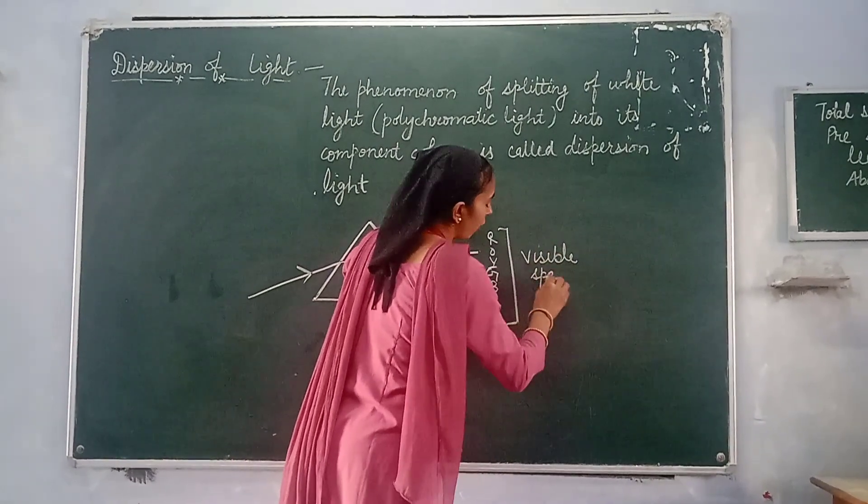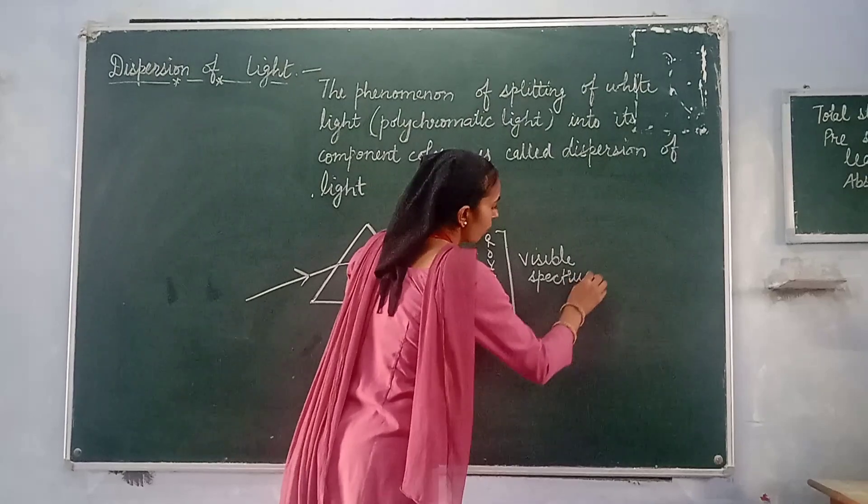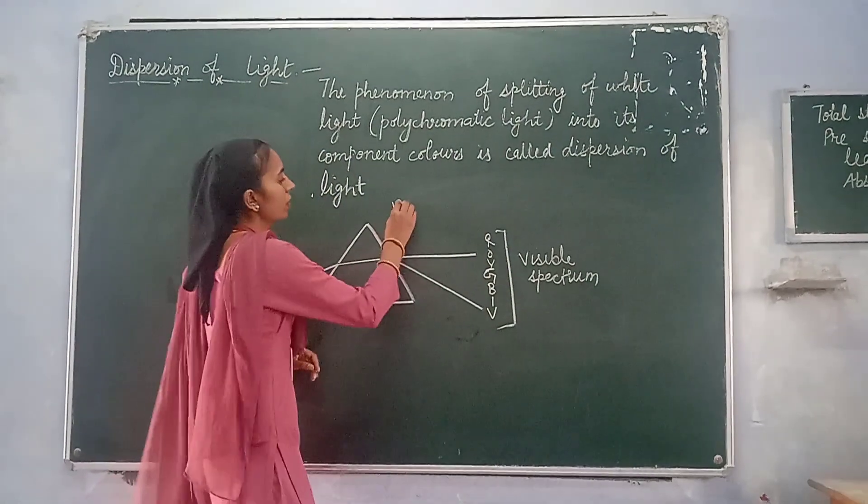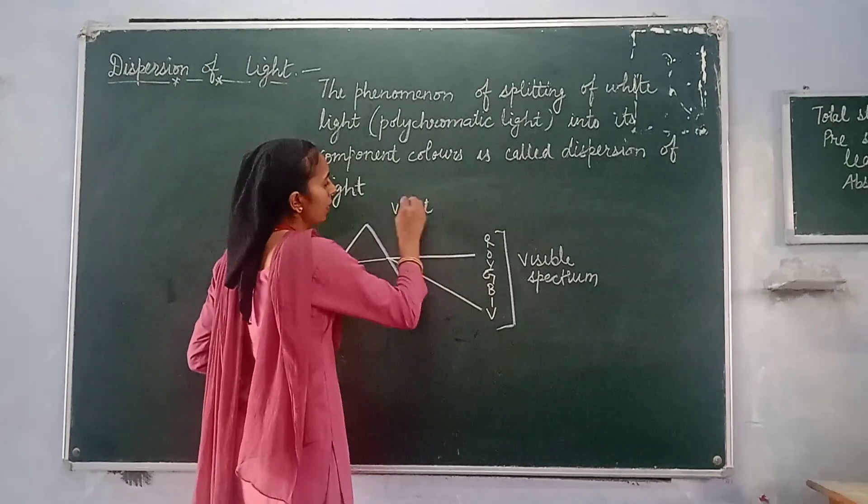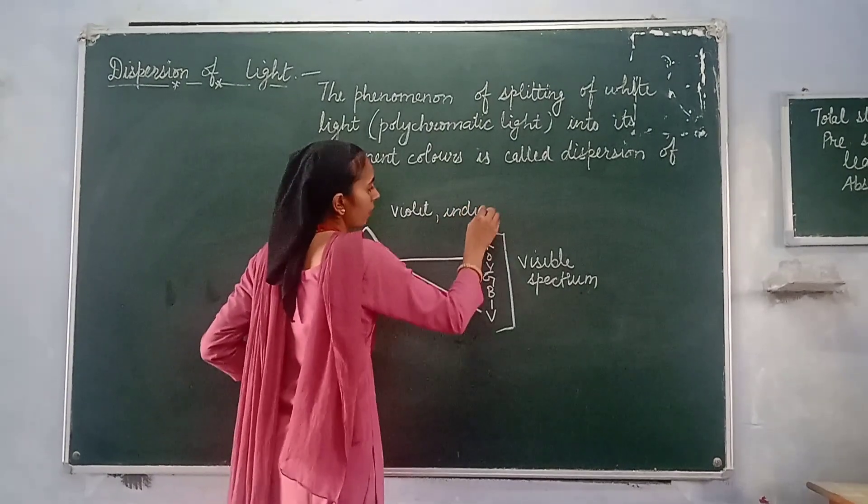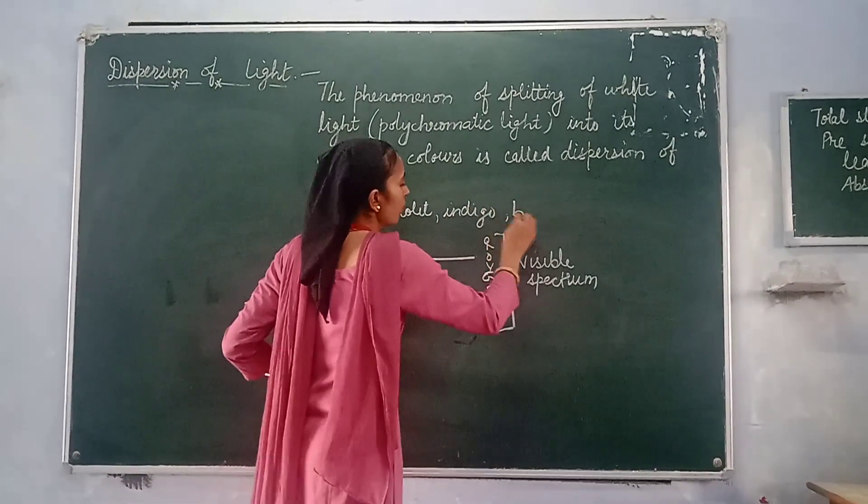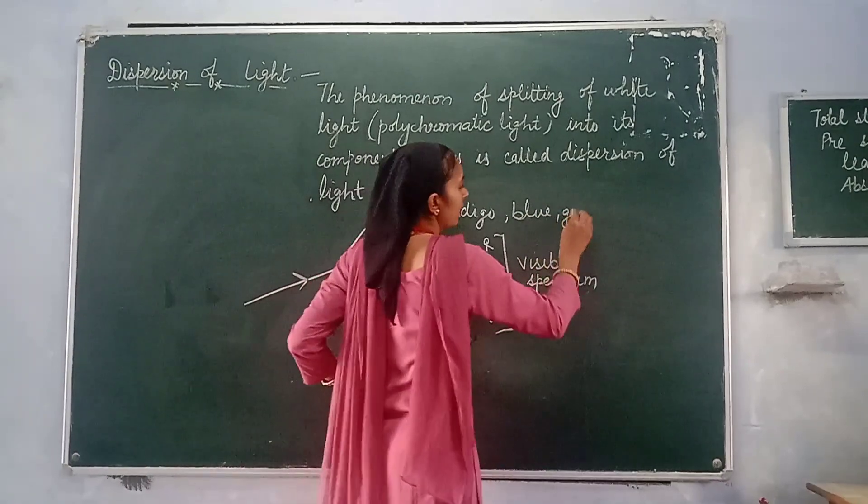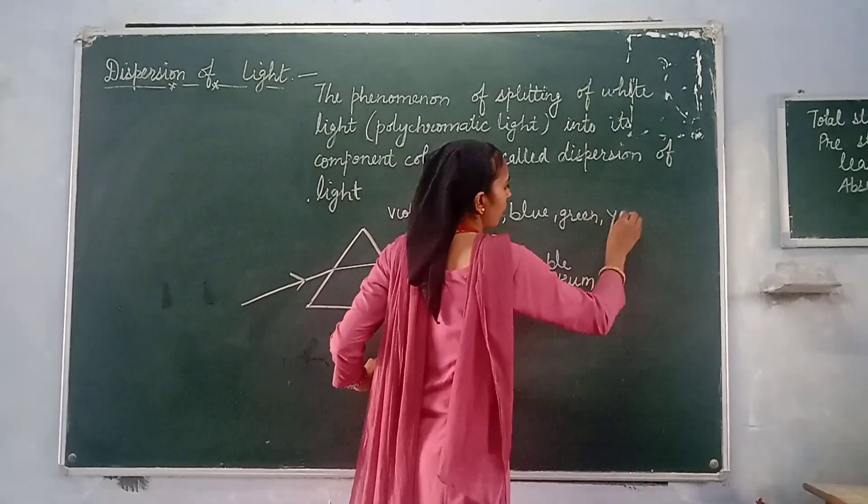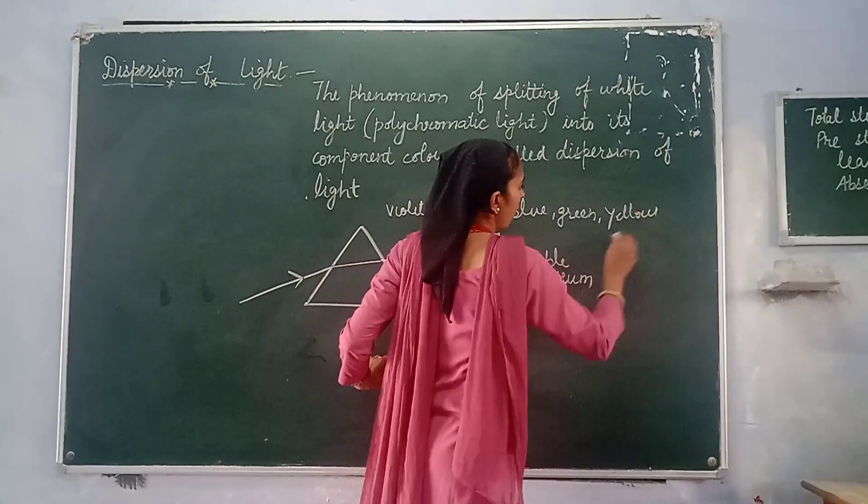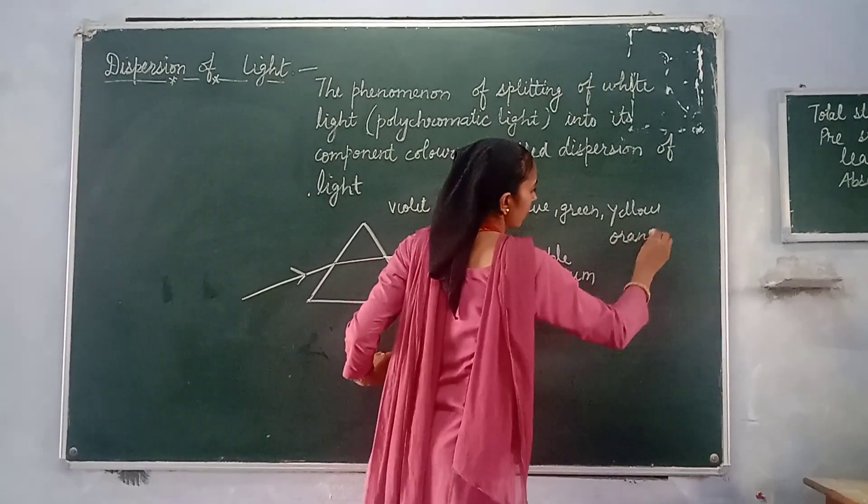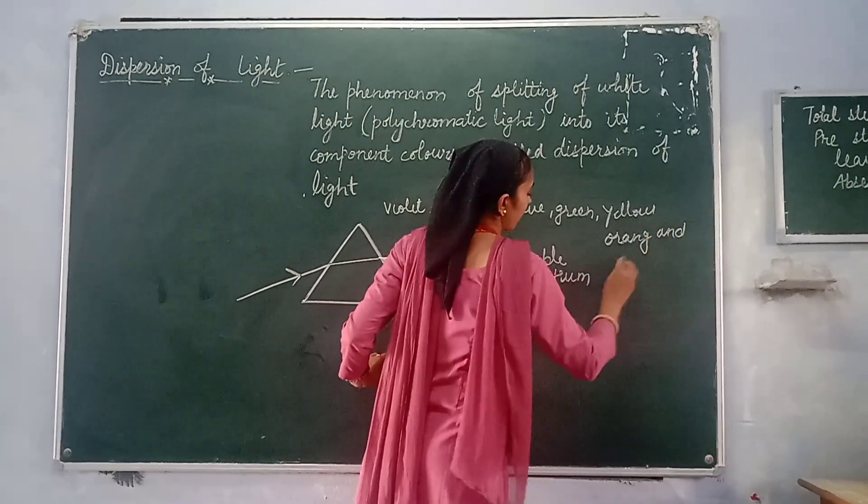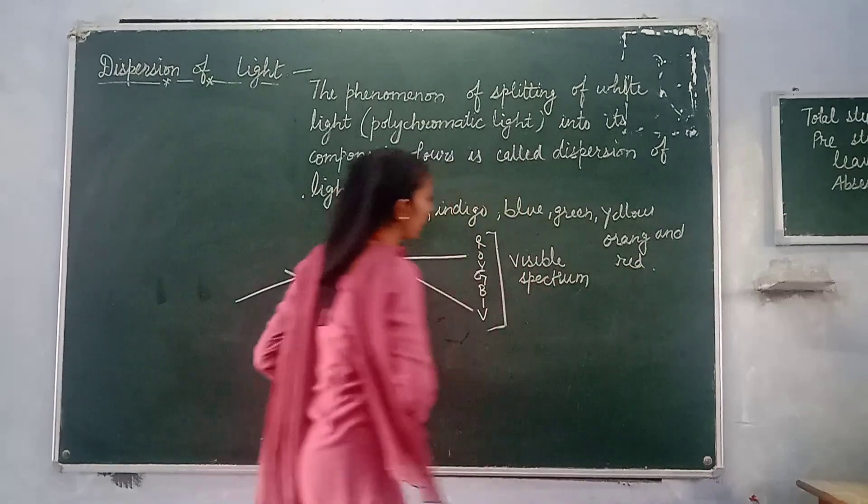The band of seven colors is called visible spectrum. These colors are violet, indigo, blue, green, yellow, orange, and red.